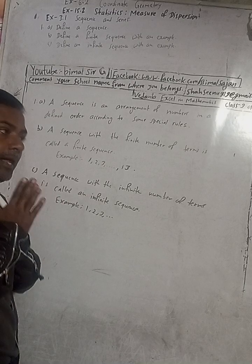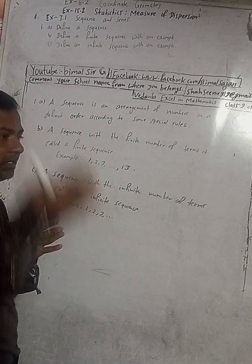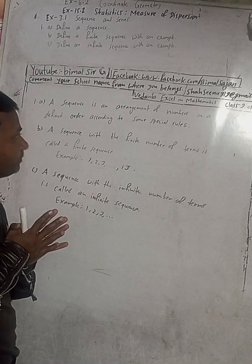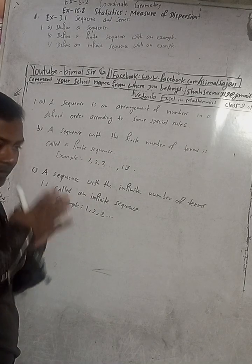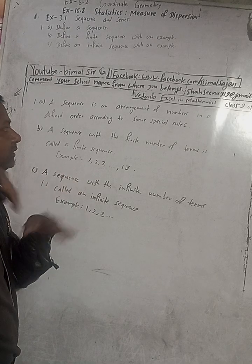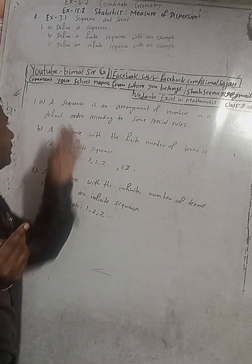For example, natural numbers less than 20 form a finite sequence, whereas natural numbers more than 20 form an infinite sequence.